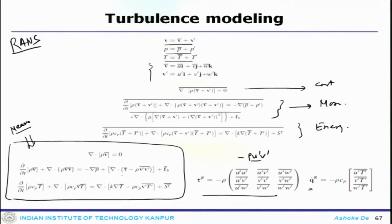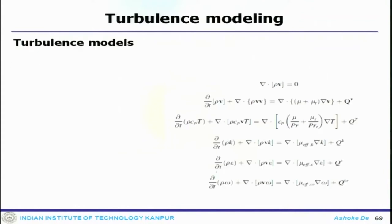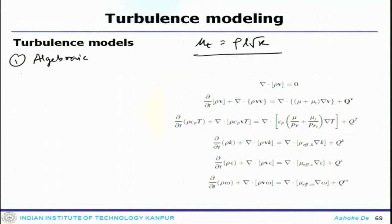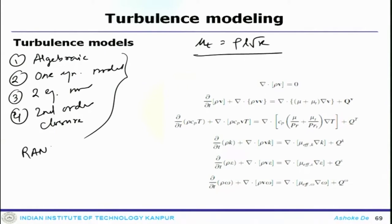With turbulent eddy viscosity, the system has a diffusion term with effective viscosity mu + mu_T — this is the effective viscosity in your momentum equation. Similarly, in the thermal equation there will be an effective conductivity. How to calculate mu_T gives rise to different kinds of turbulence models: algebraic turbulence models, one-equation models, two-equation models, and second-order closure models. These are the different kinds of RANS models.